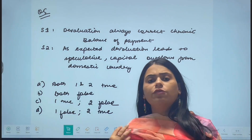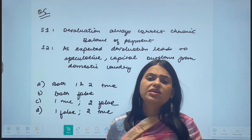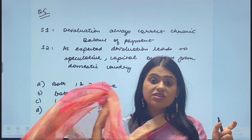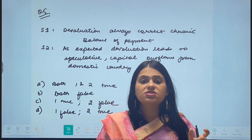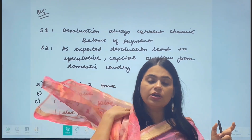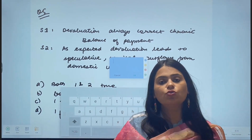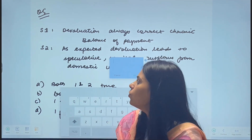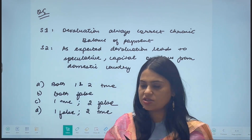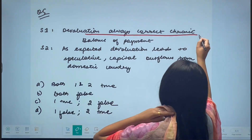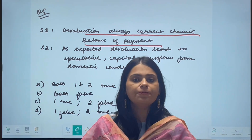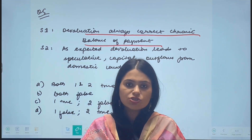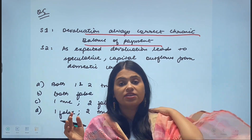The next question involves assertion-reason type questions, which frequently appear in exams. You are given two statements and asked whether statement two is a correct reason for statement one, or whether both are true or false. The first statement here says devaluation always corrects chronic balance of payments deficits. Is this true or false? The answer is false — this is not a correct statement.